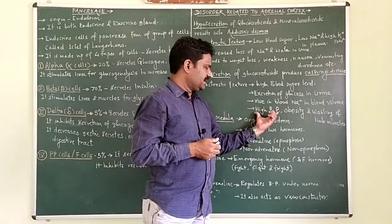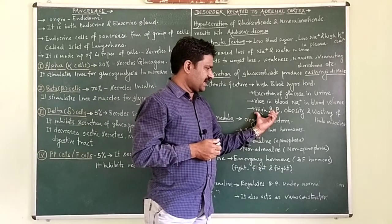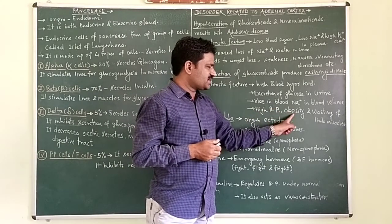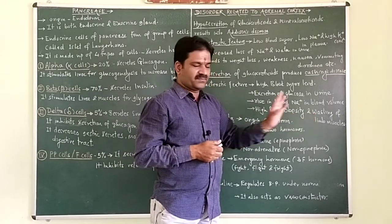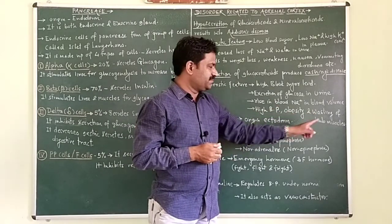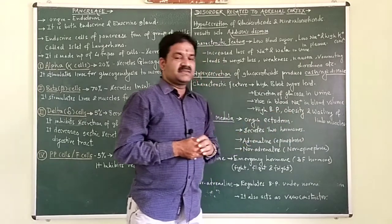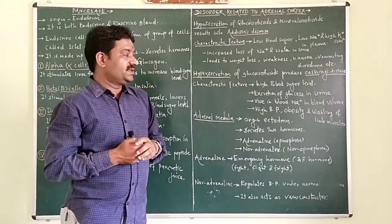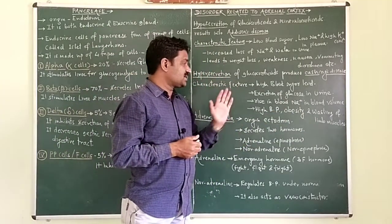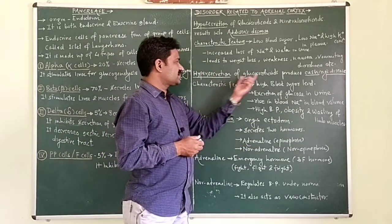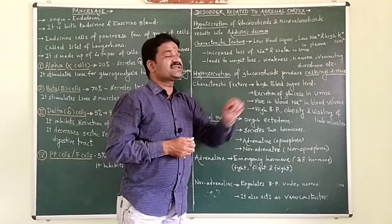Further symptoms of Cushing's disease include high blood pressure, obesity, and wasting of limb muscles. These are the different characteristic features of Cushing's disease.